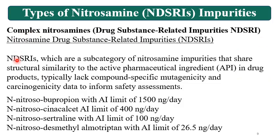Complex Nitrosamines are called NDSRIs — Nitrosamine Drug Substance-Related Impurities. NDSRIs are a subcategory of Nitrosamine impurities that share structural similarity to the active pharmaceutical ingredient (API) in the drug product, and typically lack compound-specific mutagenicity and carcinogenicity data to inform safety assessments. Therefore, a read-across approach and SAR (structural activity relationship) approach are taken into consideration for determining limits for NDSRIs.